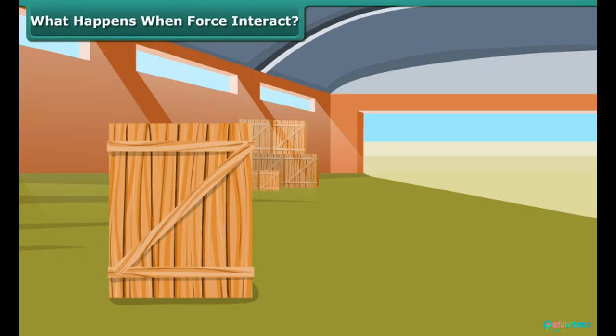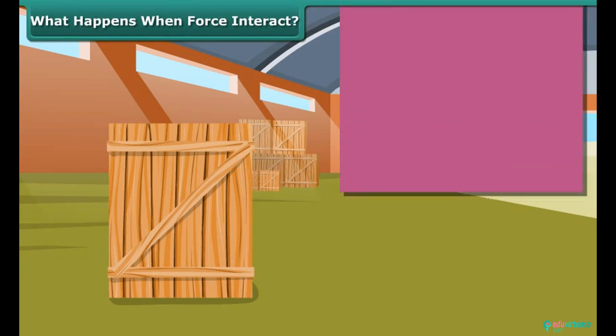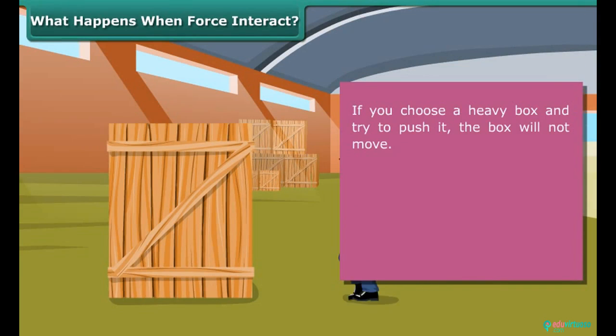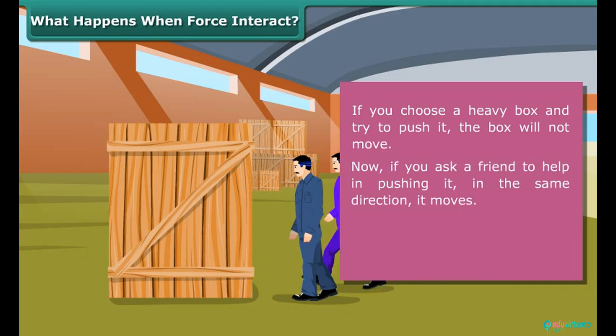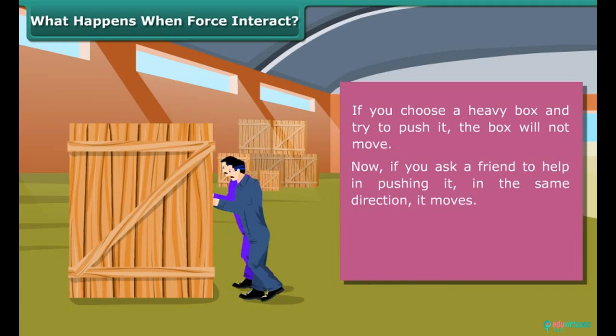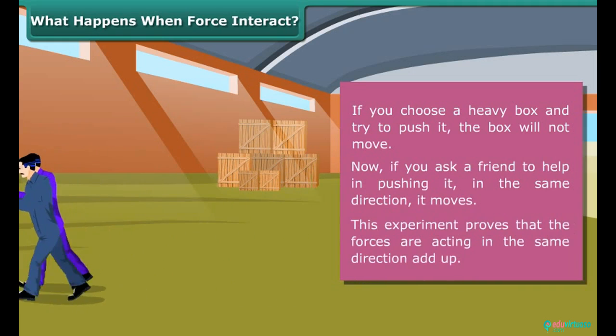What happens when force interact? If you choose a heavy box and try to push it, the box will not move. Now if you ask a friend to help in pushing it in the same direction, it moves. This experiment proves that the forces acting in the same direction add up.